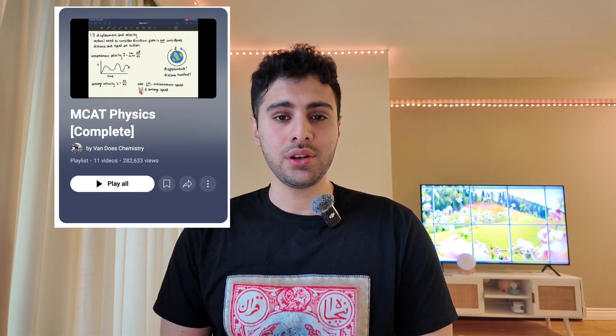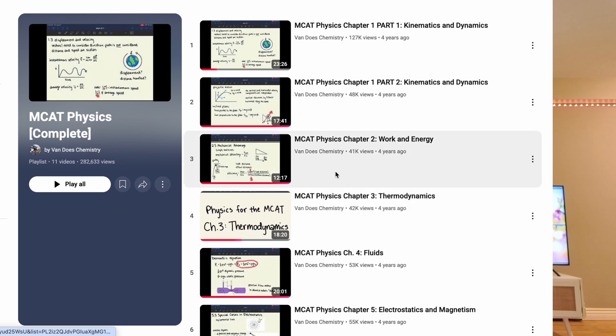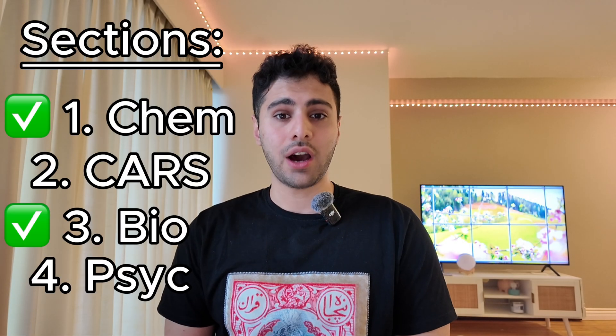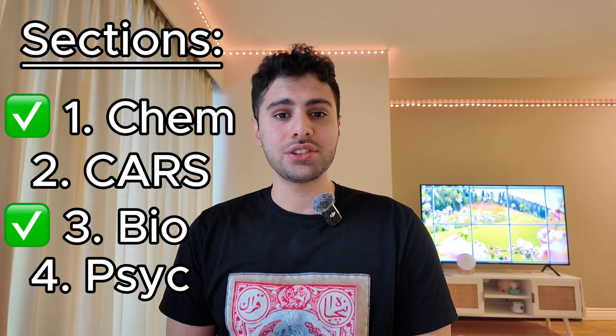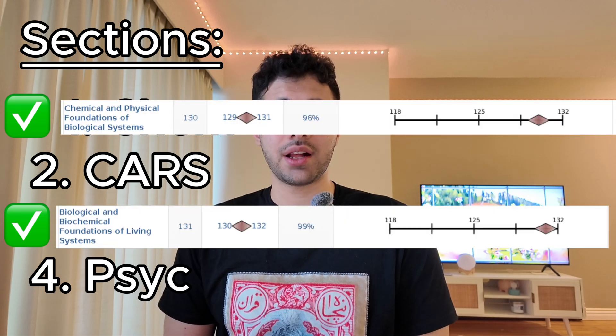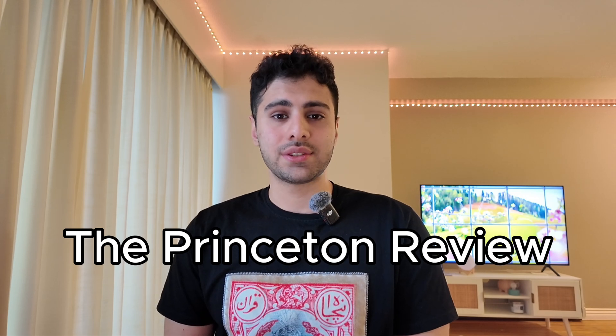To cover the physics section, instead of reading the Kaplan book, I found a YouTube channel that summarizes the physics concepts from the Kaplan book and explains them really well — and it's much faster, saving you a lot of time. Using just these resources, I was able to score 130-plus in both chemistry and bio. Other textbooks like Princeton Review exist, but my students and I used Kaplan and were happy with it — it's sufficient to do well on the MCAT.